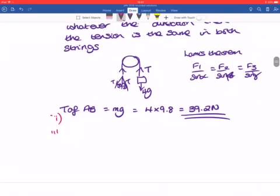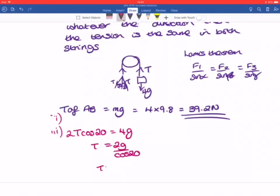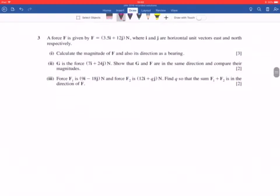2T cos 20 equals 4G. So rearranging that, you've got T equals 2G over cos 20. Be super careful with your calculations and your calculator. So you end up with T equals 20.9 newtons to 3 significant figures. Always just say to the examiner, write everything down if you need to.